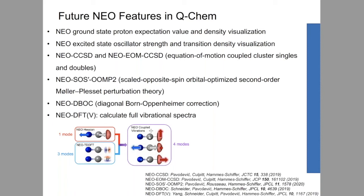Do you have preliminary data in one of the papers? For NEO-DFTV, I don't have the table currently, but it can be found in the reference listed. You can see we compare, for instance, the CH stretch in harmonic versus anharmonic vibrational frequencies, and NEO is able to capture the anharmonicity of the CH stretch. There are a couple of molecules you can find in the paper.